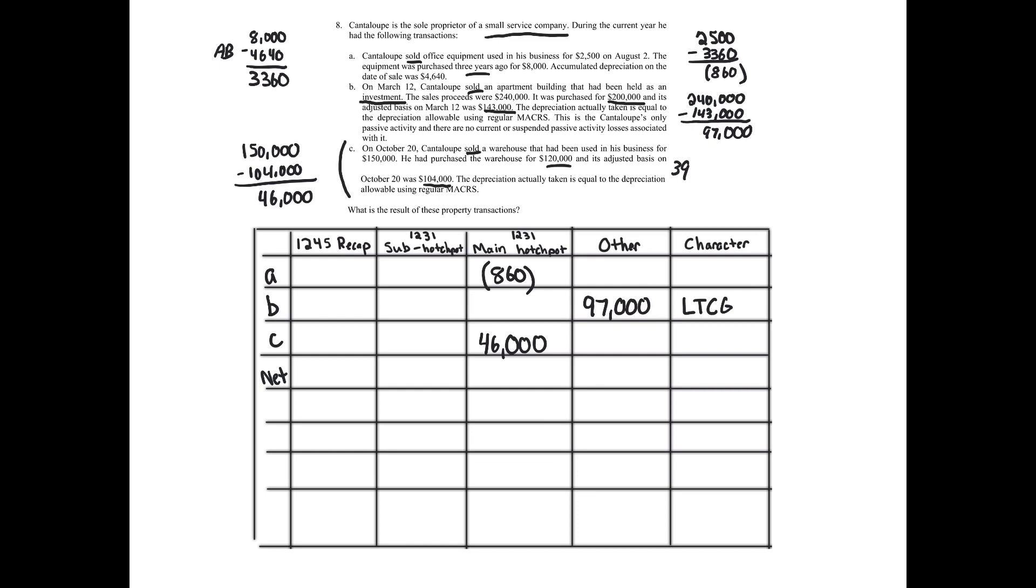Nothing 1245. We don't net 1245 anyways. I just always note that. Nothing in the sub-hodgepodge. We can move on right to the main hodgepodge. We have a net gain of $45,140. What does that mean? Everything in the main hodgepodge is long-term capital. So we have a long-term capital loss, long-term capital gain. Last step, we've got some long-term capital gains. If you see long-term capital gains, you got to ask, hey, is it real property that's been depreciated? B, we've got a rental apartment building. It's real property that's been depreciated. Yes. Unrecaptured Section 1250 applies.